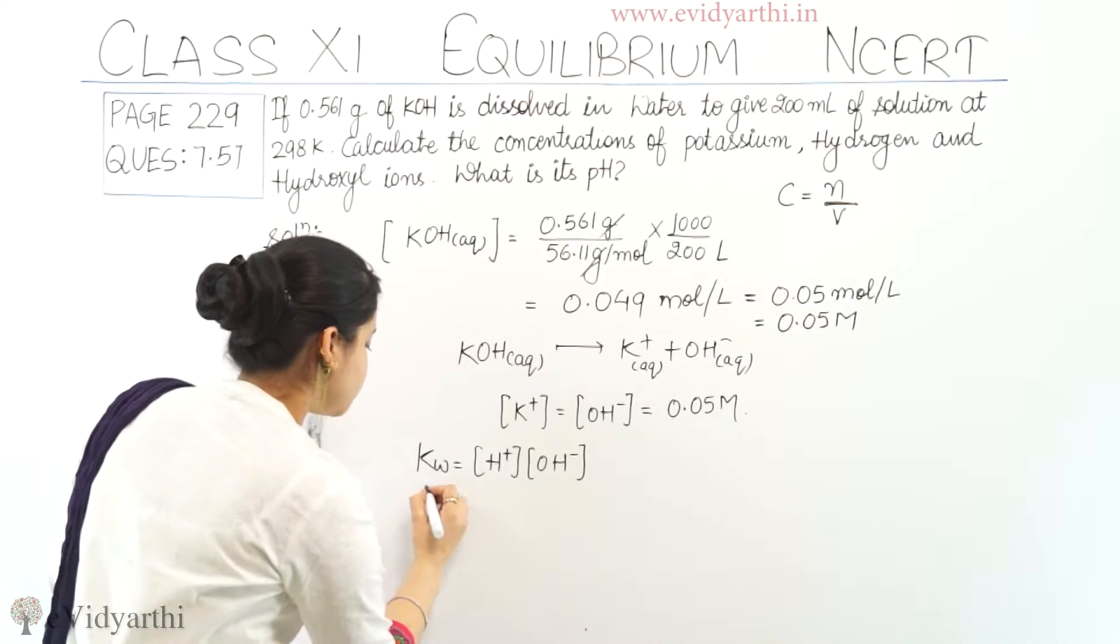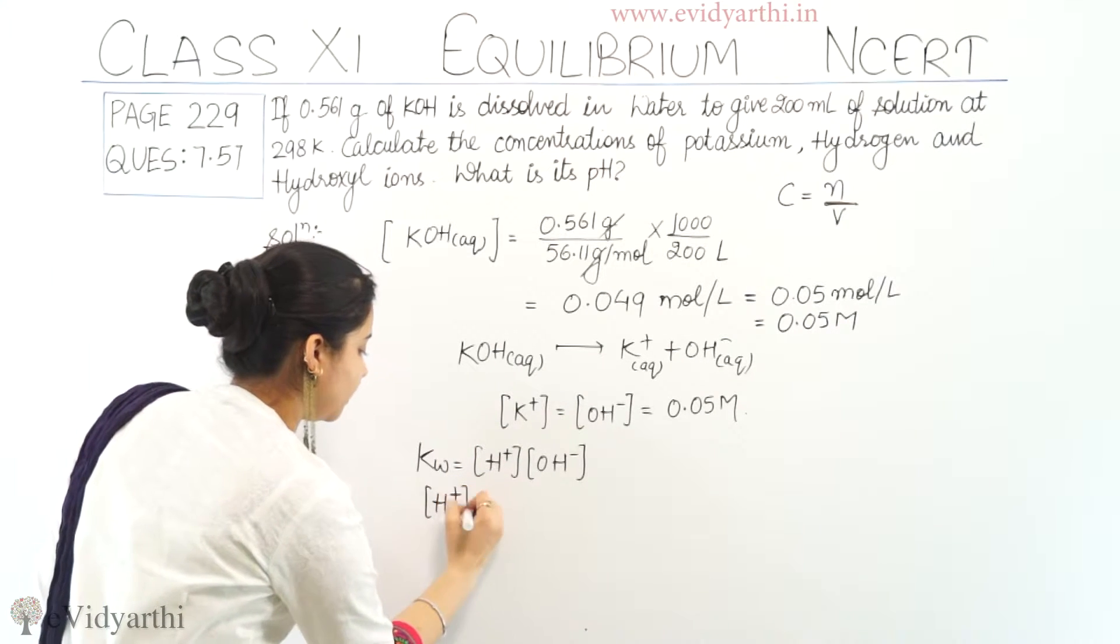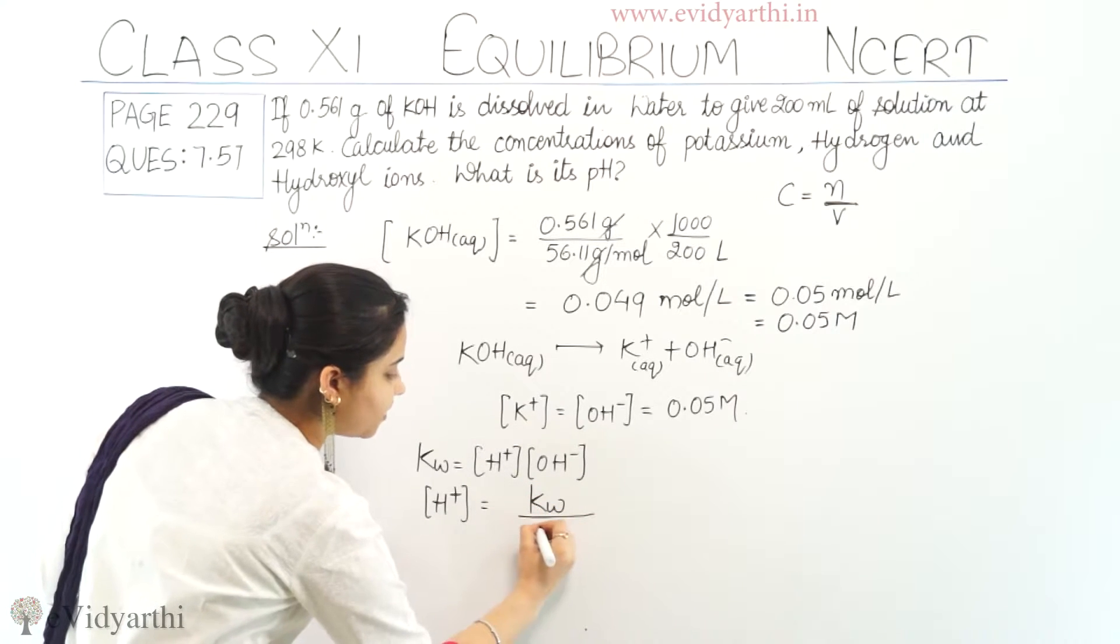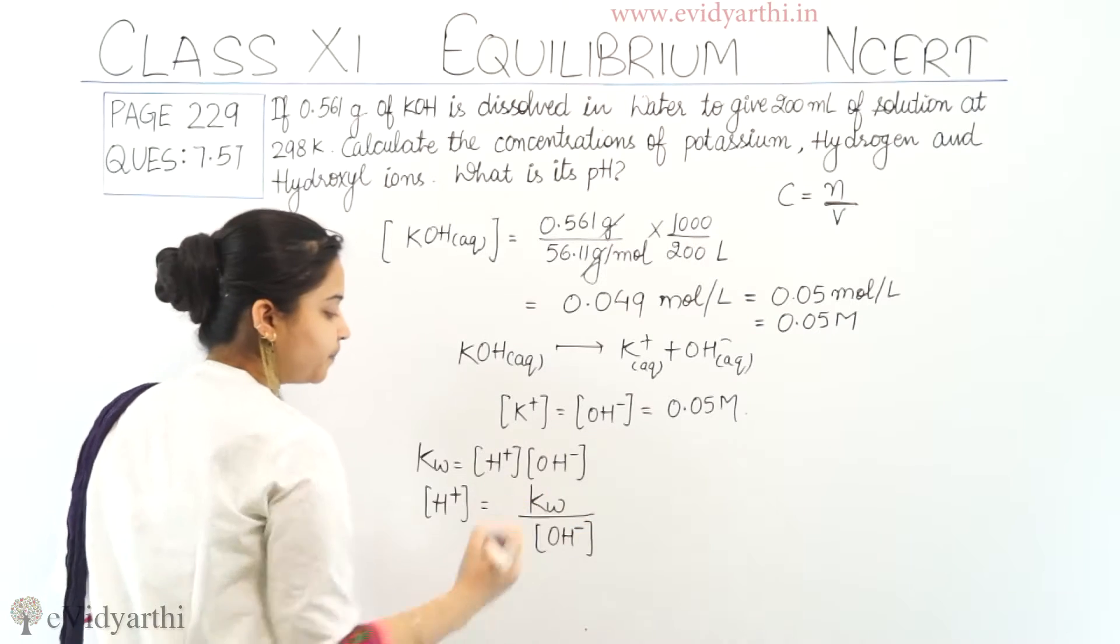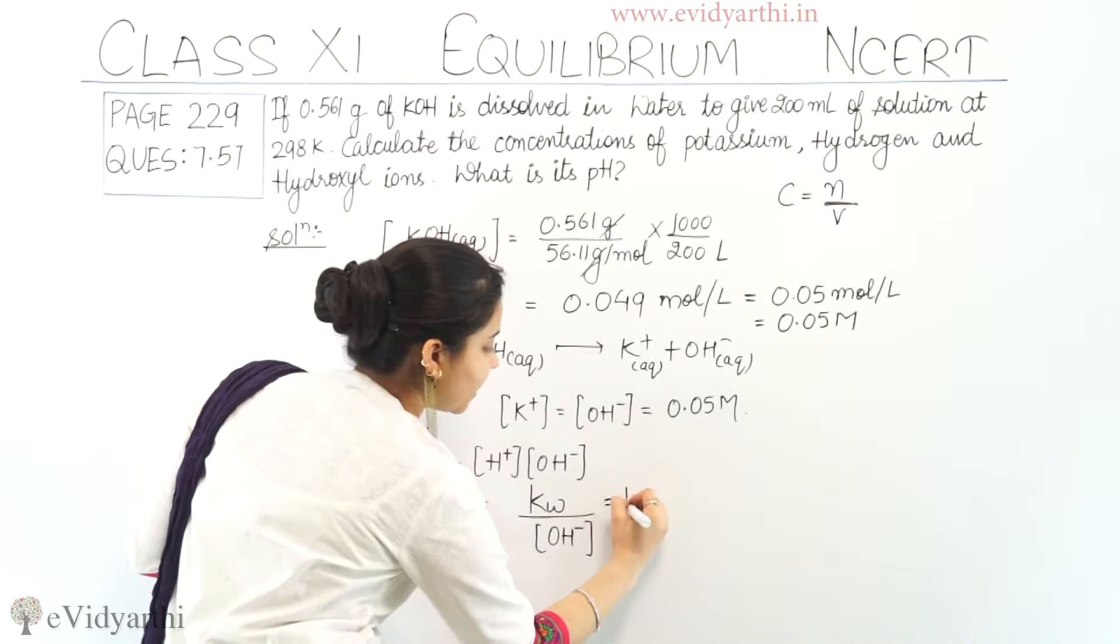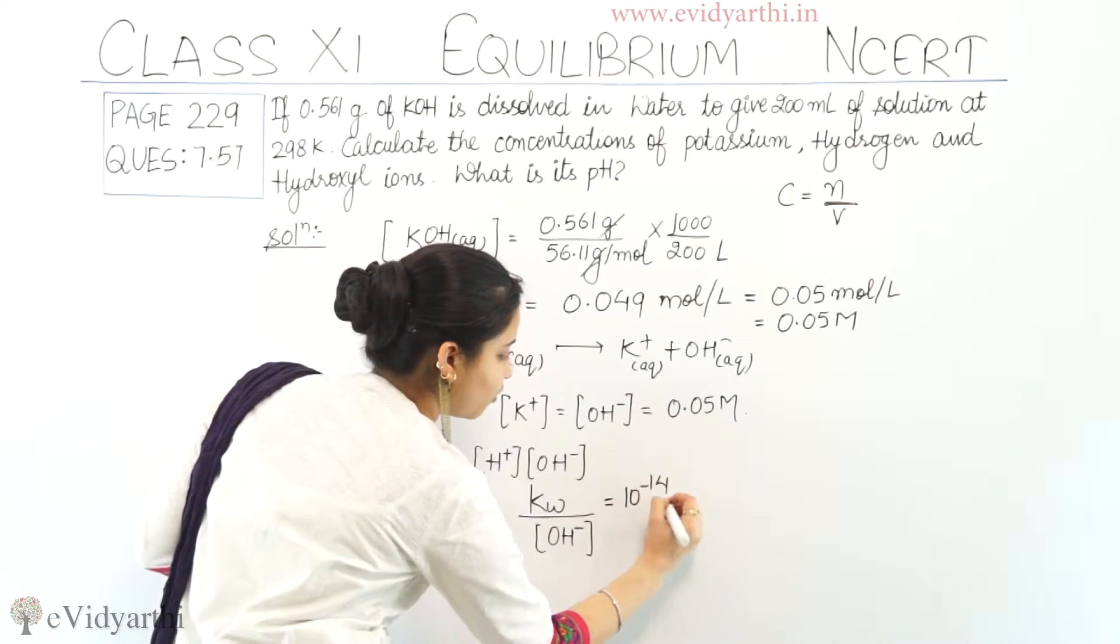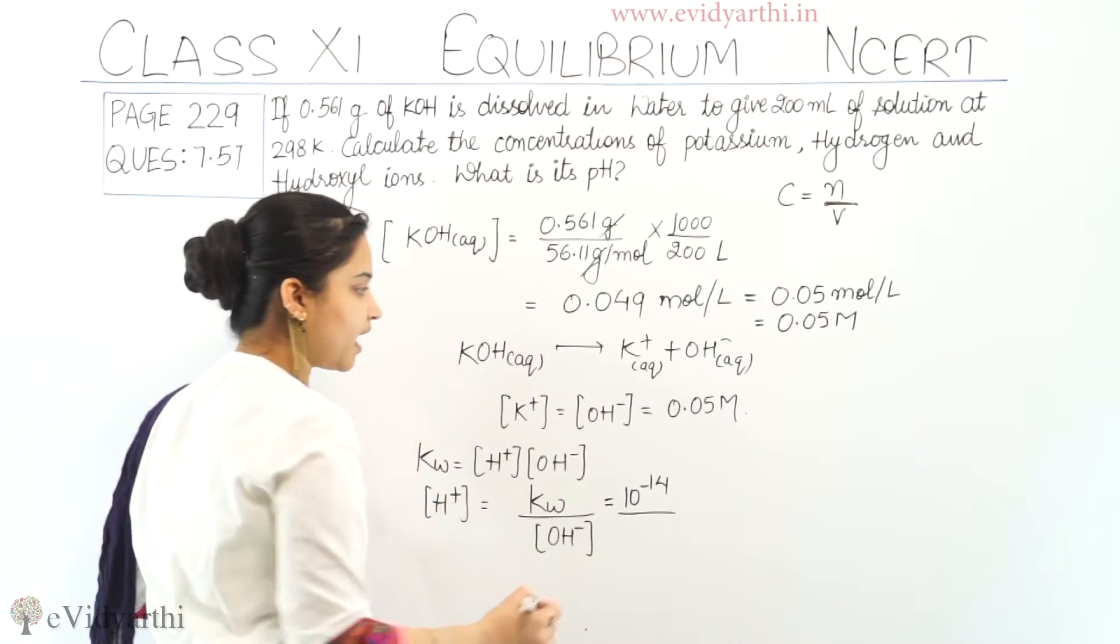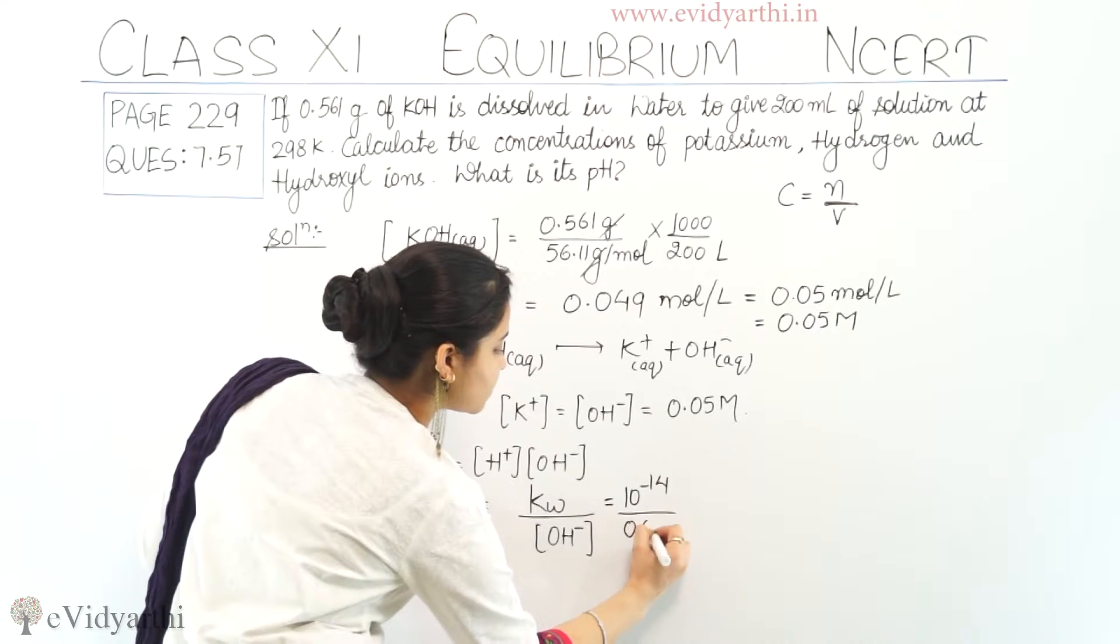Ab dekhiye. Concentration of H positive ion is equals to KW that means ionic product of water divided by concentration of OH negative ion. KW ki value sabhi ko pata hai. It is 10 raise to power minus 14. And what is the value of concentration of hydroxyl ion? It is 0.05.